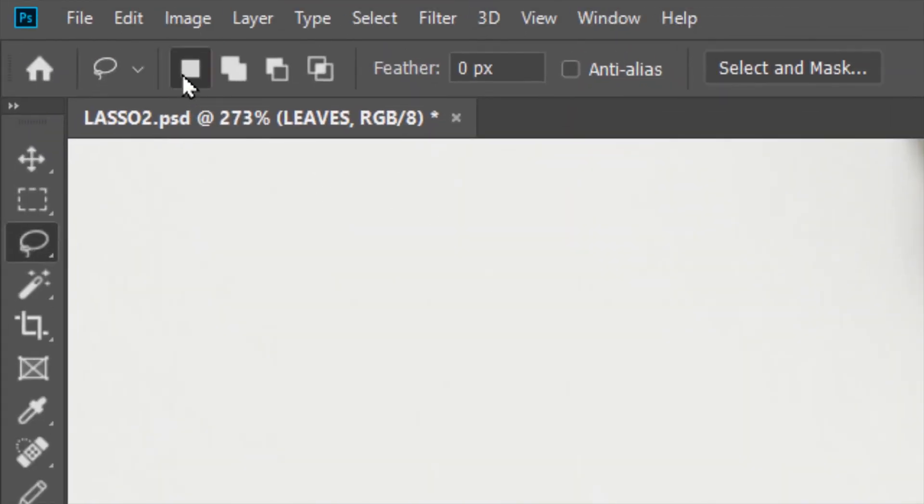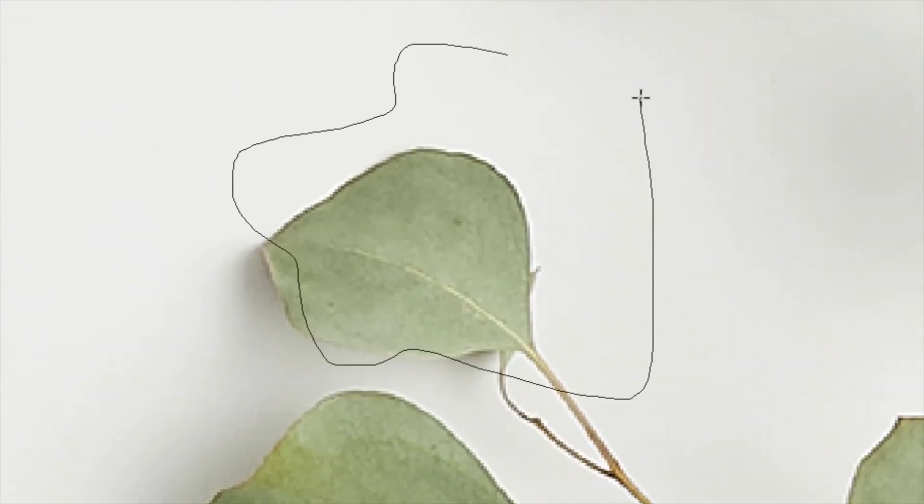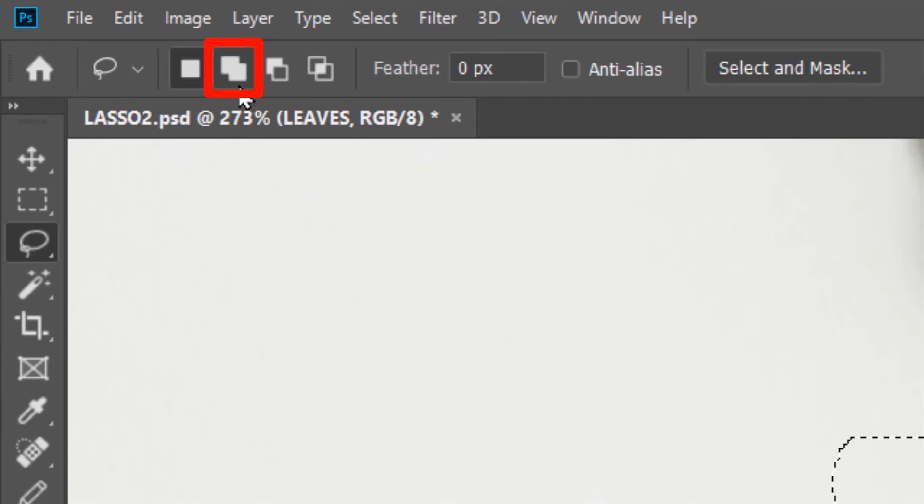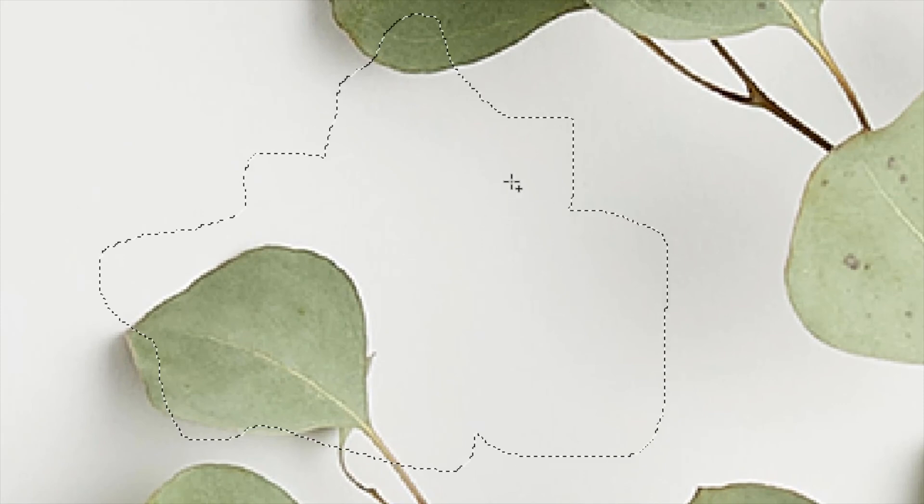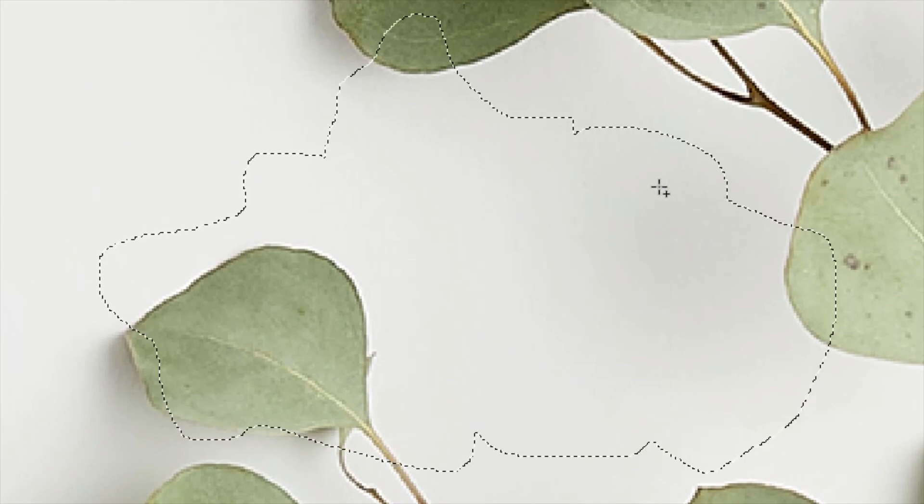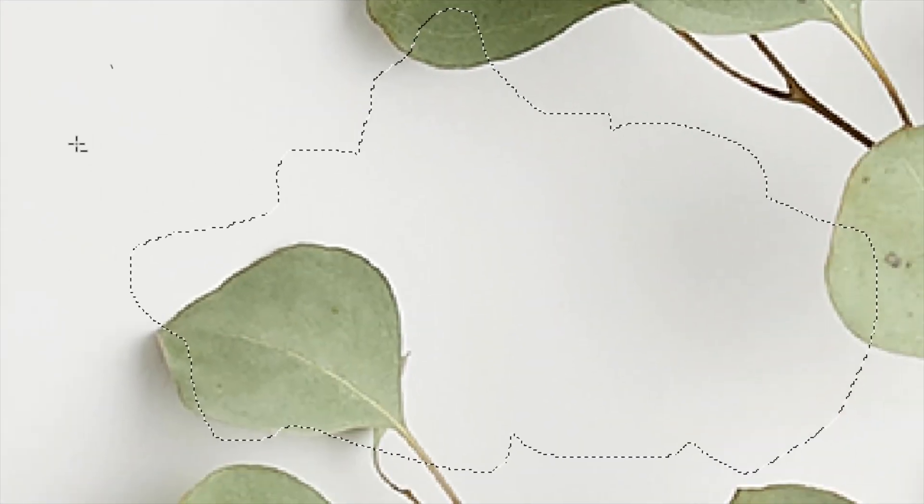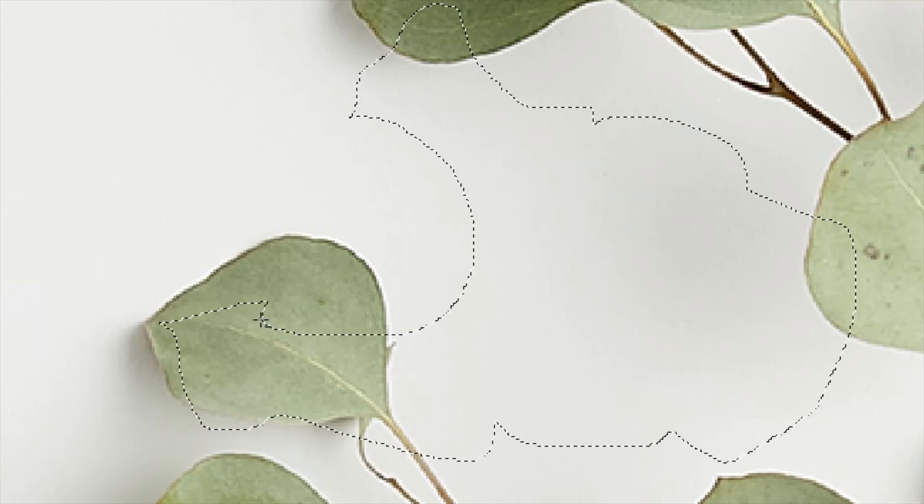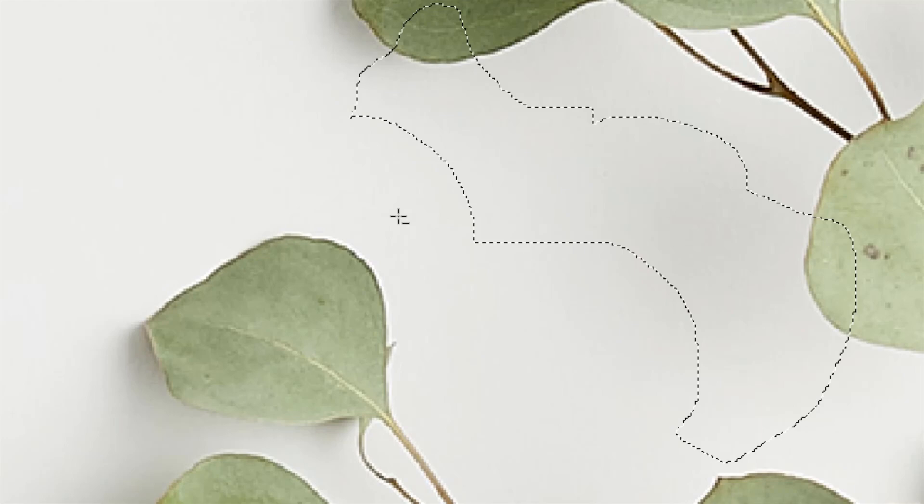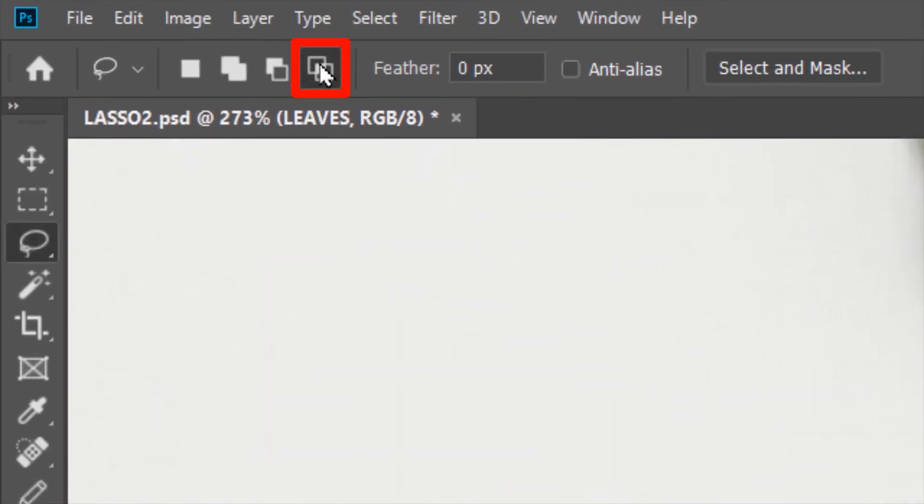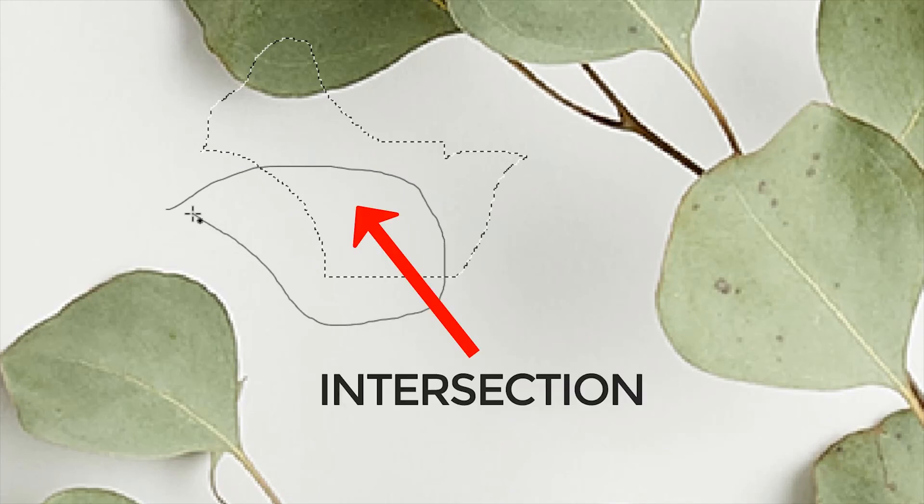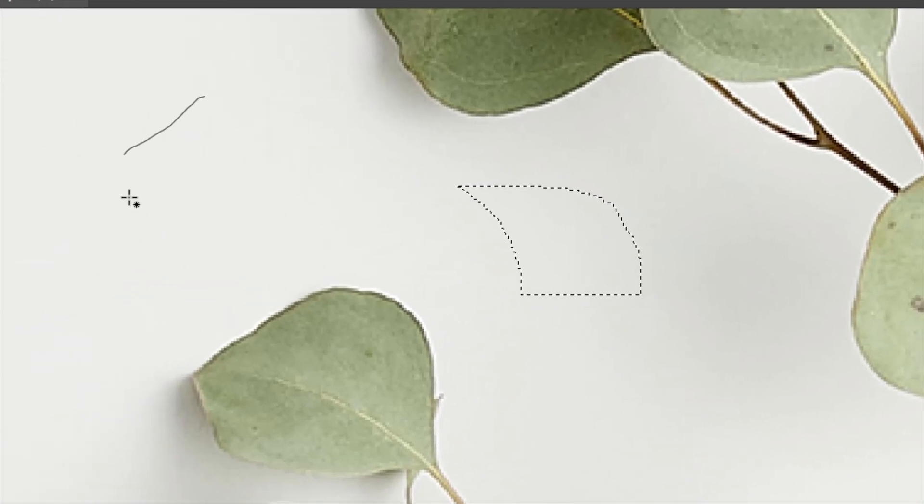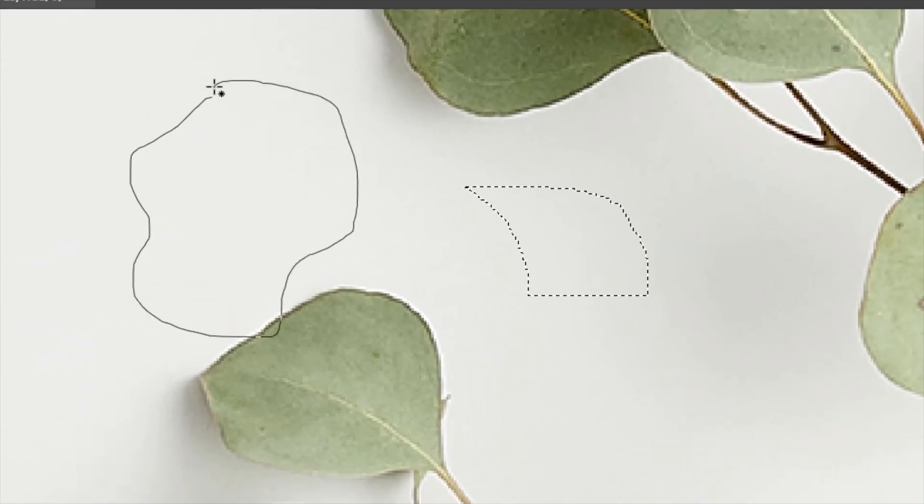This option lets you create new selections. This option lets you add to an existing selection. This icon lets you subtract from an existing selection. This icon lets you make selection at the intersection of two selections. But if I draw the selection here outside there will be no intersection point and it will show an error.